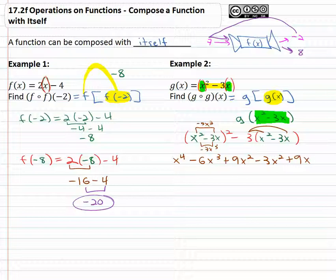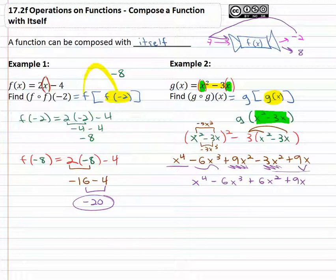And then we just have to combine like terms to simplify our result. X to the fourth minus six x cubed, nine x squared minus three x squared is plus six x squared, and finally plus nine x. Then we have our result.